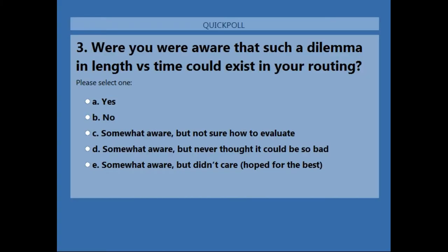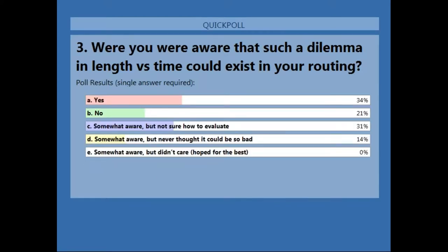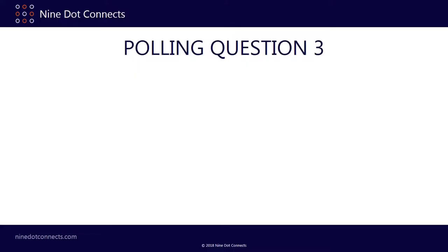Polling question three: how many of you were aware that such a length-versus-time dilemma could exist in your routing? Results: 34% said yes, 21% said no, and 31% were somewhat aware but not sure how to calculate it. The 21% who were unaware are really going to find this presentation helpful. There are also people out there routing boards with no clue this problem can be this significant.